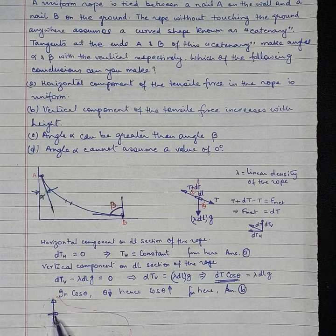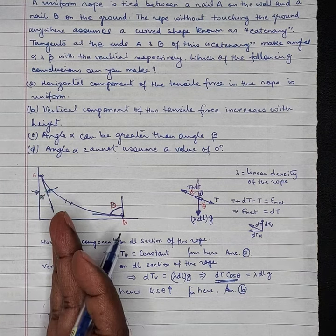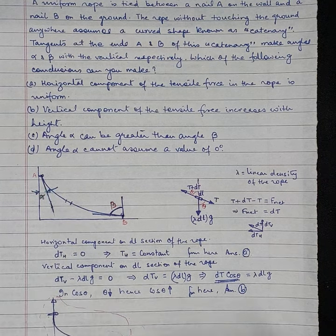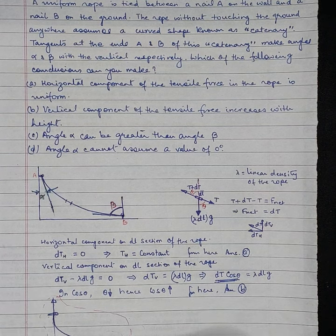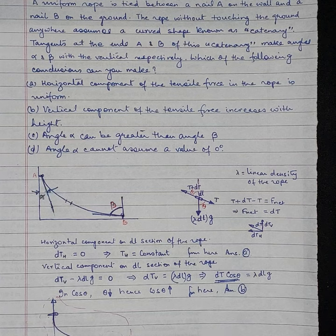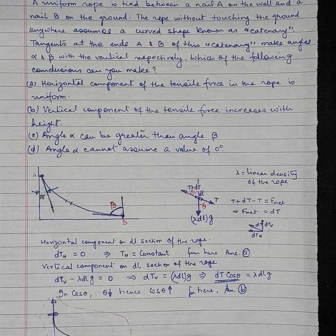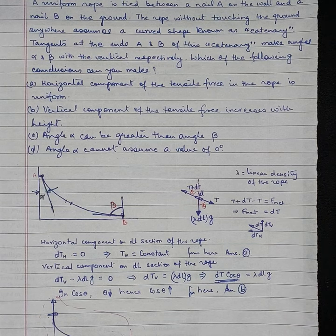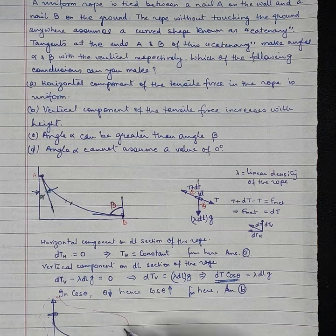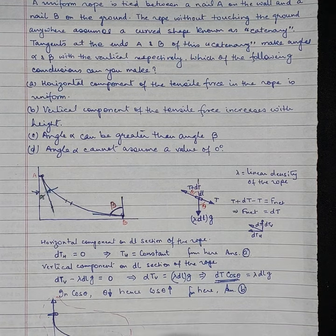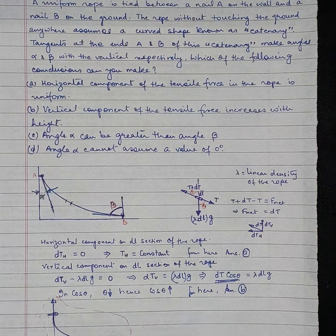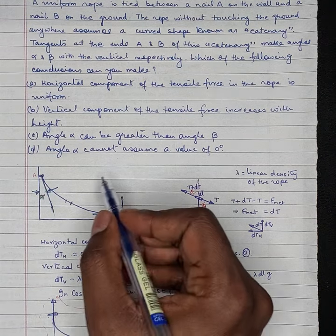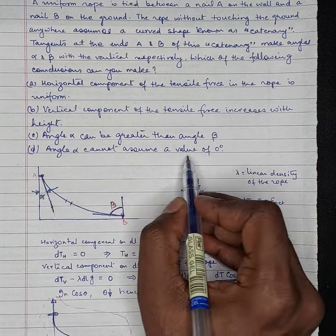For that to happen, alpha can never be 0. If alpha is not 0, then it will have a vertical component of the force as well as the horizontal component. Horizontal component of the force will nullify the horizontal component of force provided by or caused by the nail at the ground to the rope. So that will cancel out and vertical component will be balancing out the entire weight.